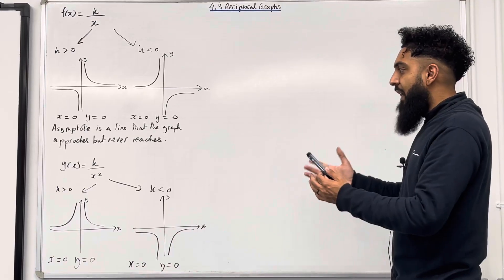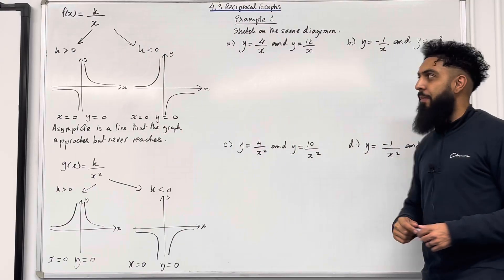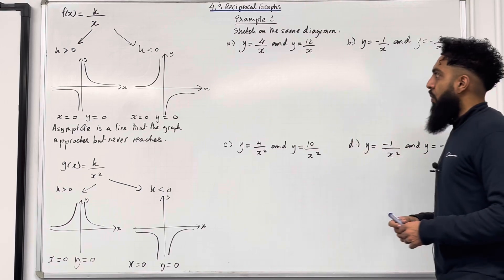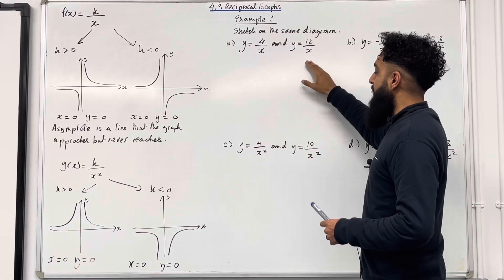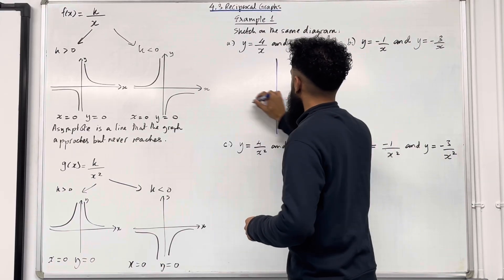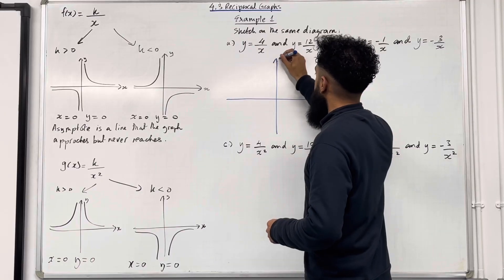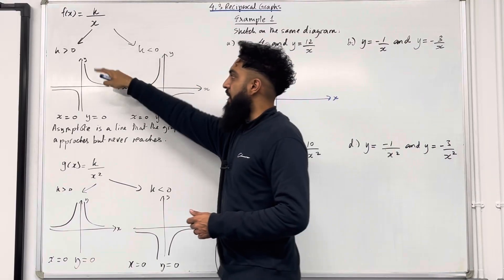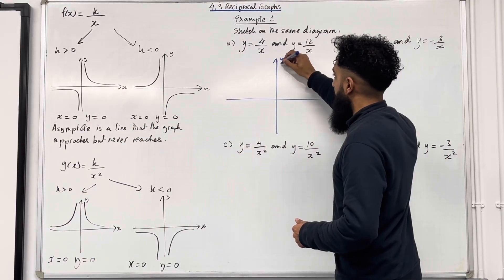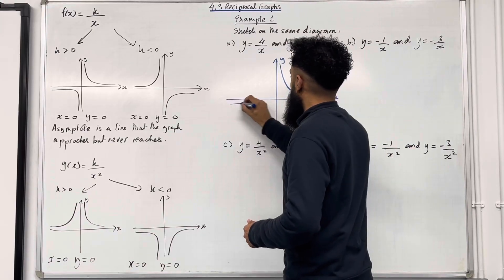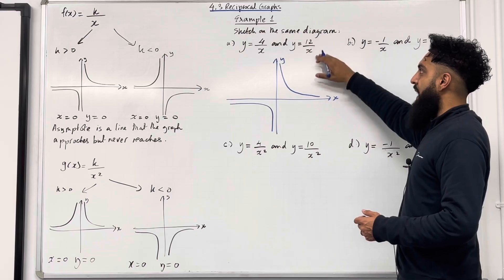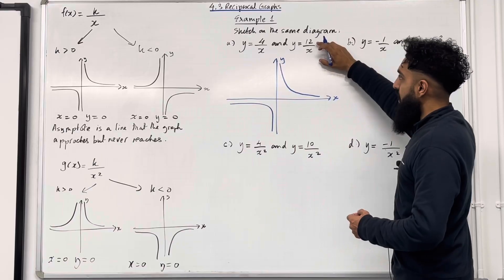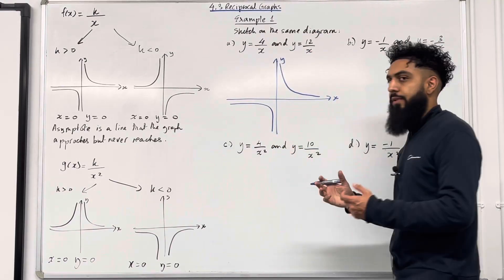We're going to be using these key facts to sketch reciprocal graphs. Let's have a look at example 1: sketch on the same diagram parts A, B, C and D. Starting with part A, we've got y equal 4 over x and y equal 12 over x. Here's my coordinate grid with x and y axis. Let's start off by sketching y equal 4 over x. The numerator is positive, so it's going to take this shape. Here is 4 over x.